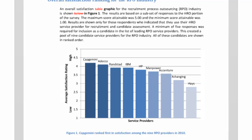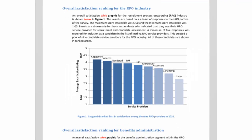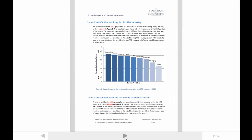For example, satisfying the reader from one of the top performing companies from the results will be easier than satisfying one from the lowest performing company. And the larger the audience, the more difficult it is to meet everyone's needs.